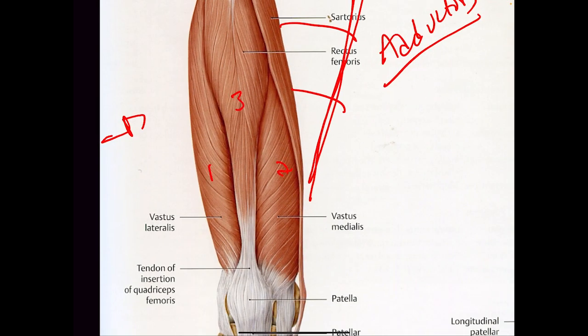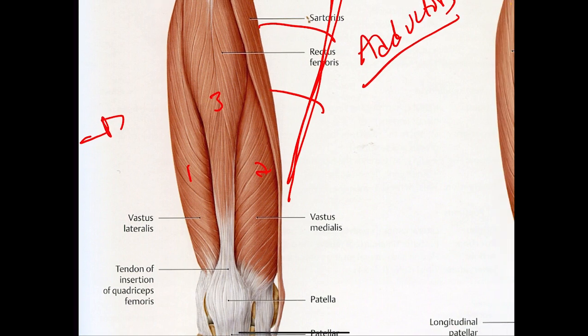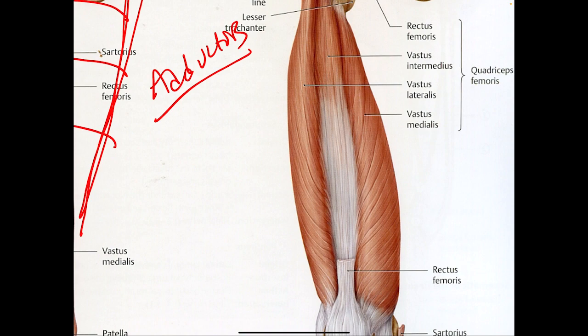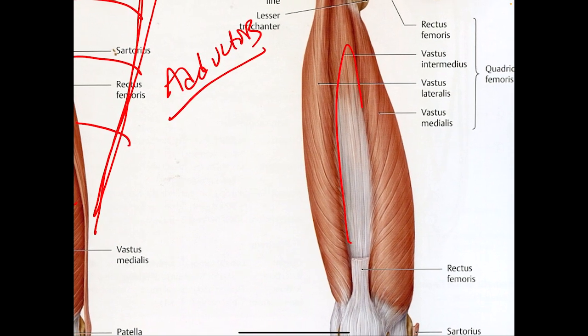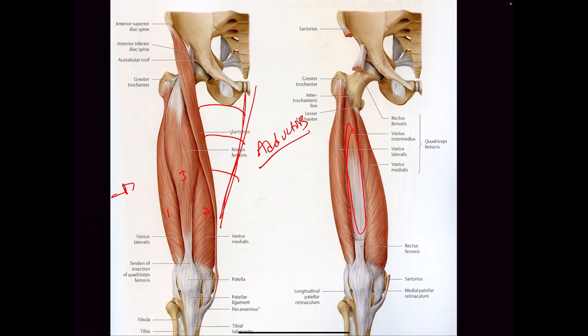This is why I liken it to the tricep on the arm. The fourth muscle actually sits right underneath, tucked right there. The one that you actually see sits on top. I'm not really sure why they ever came up with the term quadriceps because really you're only seeing three — but it is four.